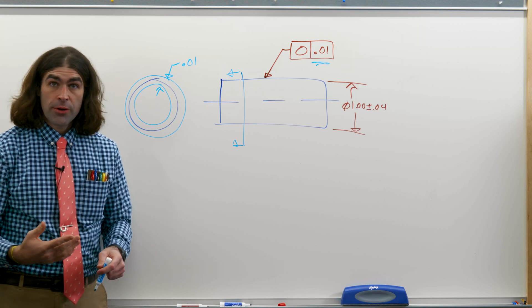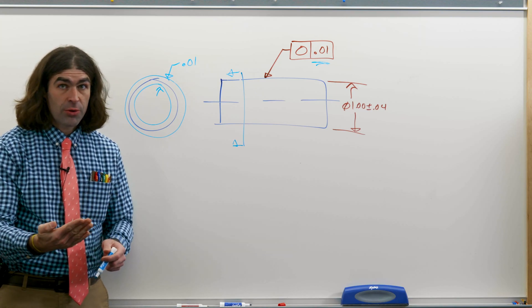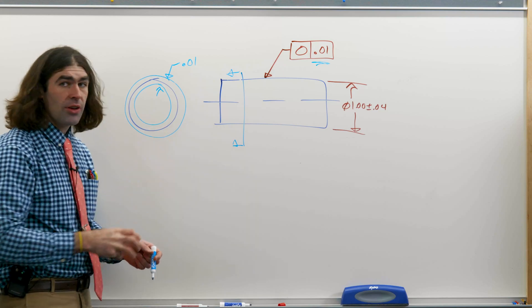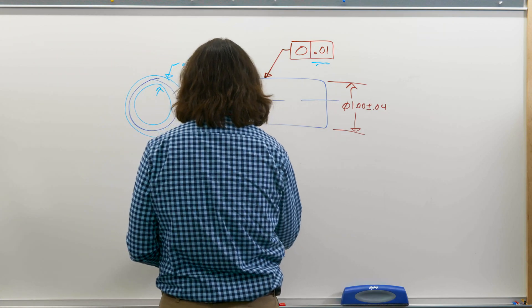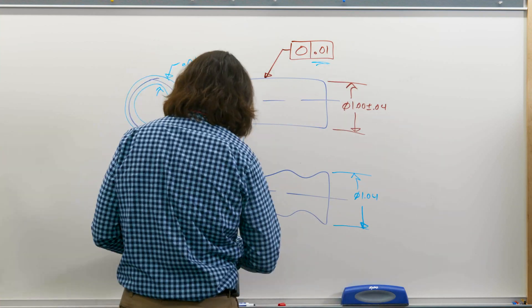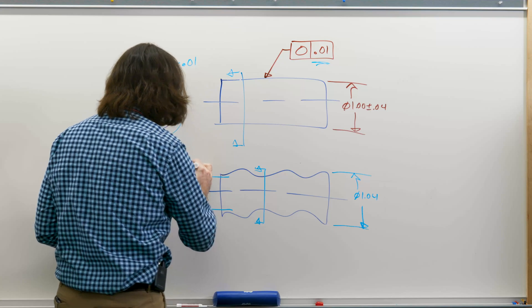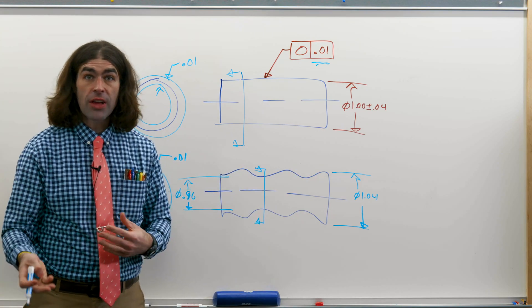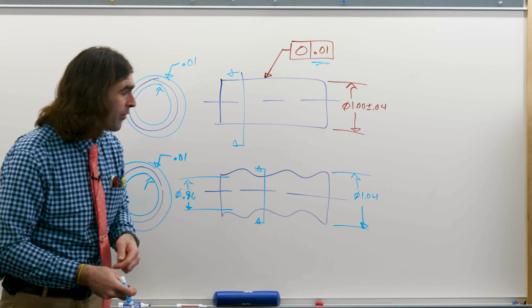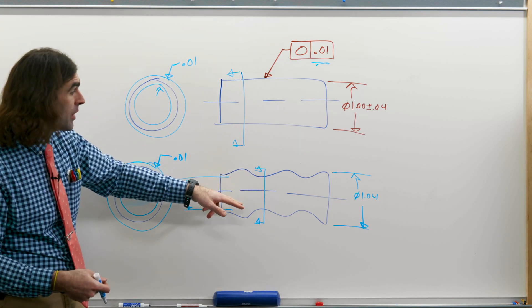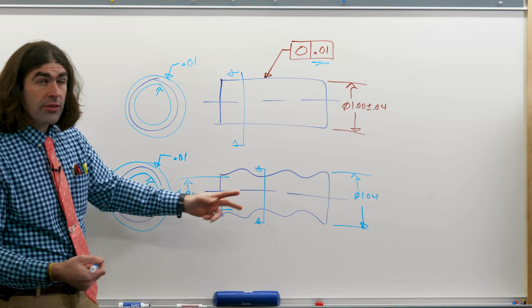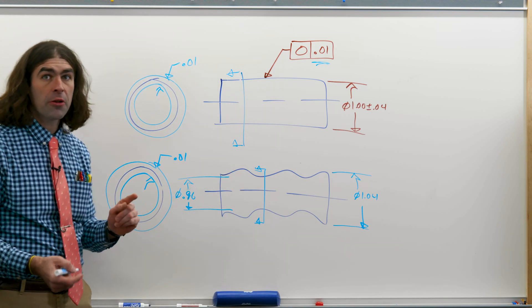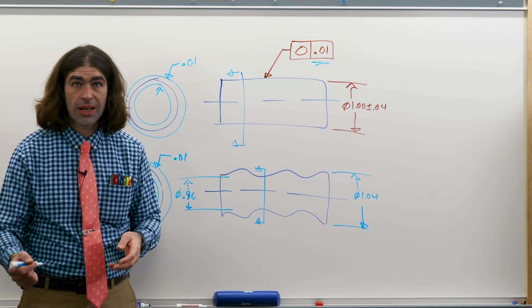Similar to other form tolerances, it only applies to these individual sections. There's no requirement for the length of the part to be straight, just that each individual section is circular. So you could end up with a part that looks like this. The length of the part can use the entire size tolerance, so this whole 80 thousandths. So the difference between the high and low points can be 40 thousandths. So the surface can use the entire tolerance here in this direction, but as long as each cross section is circular, the part is considered good to go.